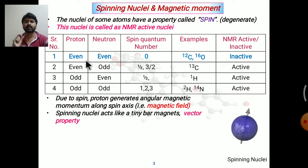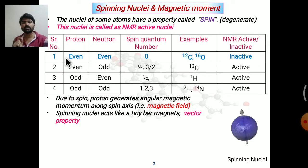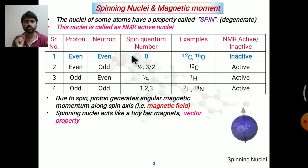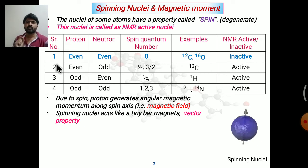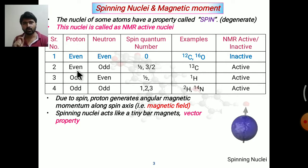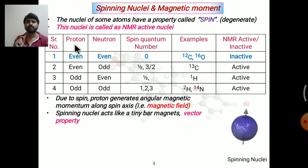Which nuclei are NMR active and which are NMR inactive can be understood with the help of a table. If a nucleus contains an even number of protons and an even number of neutrons, then it has spin quantum number 0 and is considered NMR inactive. If a nucleus contains even protons and odd neutrons, or odd protons and even neutrons, or both odd, then the nucleus is NMR active.